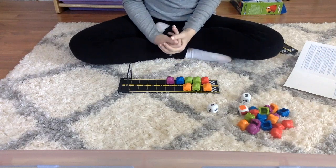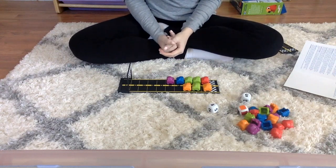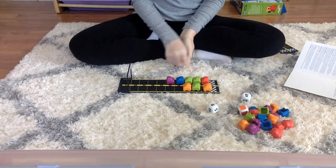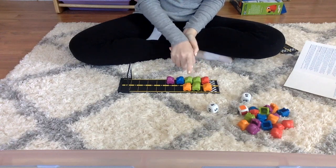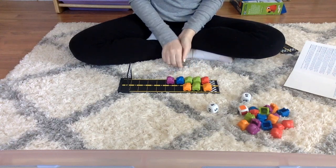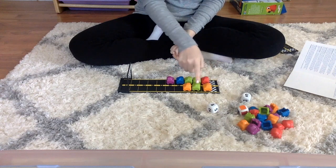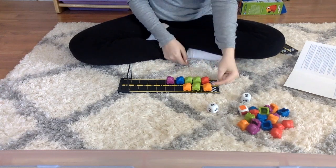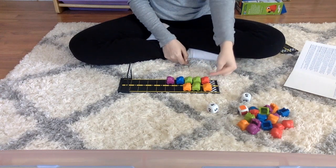You can also use math vocabulary when your child plays this game. For example, this side has one, two, three, four, five cars and this side has one, two, three cars. Three is less than five.